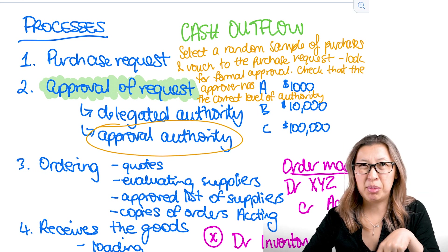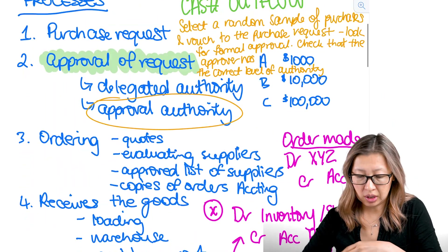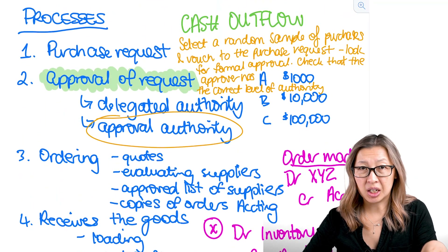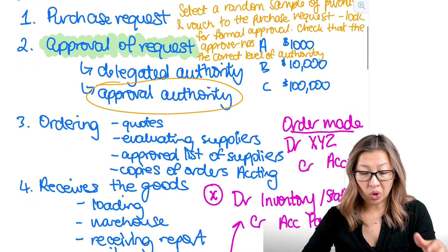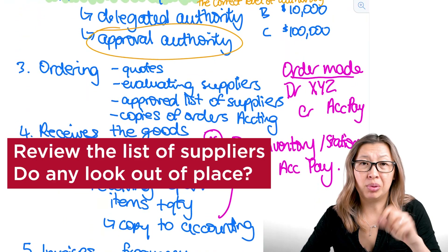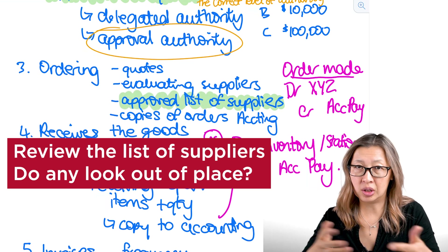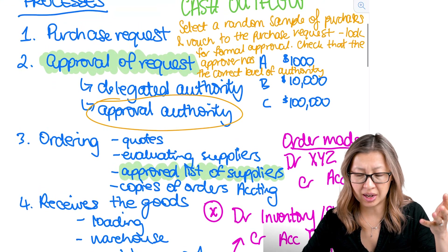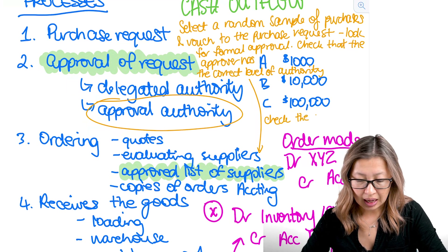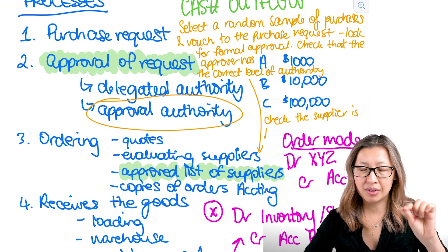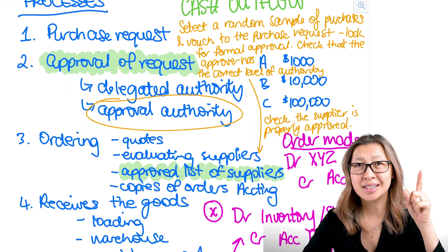When it comes to ordering, there are a couple of different controls. The first is that there's an approved list of suppliers. When we're auditing those purchases and accounts payable, we want to check that the supplier is on the approved list. If there's no approved list, that's certainly going to create some issues. We want to make sure those suppliers are appropriate and on that list. In terms of copies of orders going to different departments, we're going to check that when we look substantively.